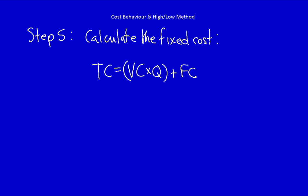I'm choosing the high number, remember that's $17,370 and 750 transfers. Total cost is equal to the $17,370. The variable cost is equal to the $16.57 that we just calculated. And Q, the quantity, is equal to 750 transfers.